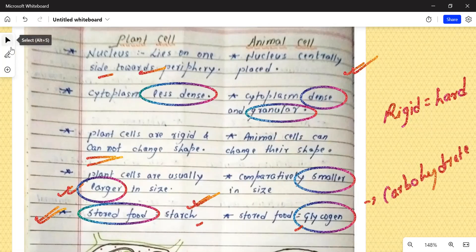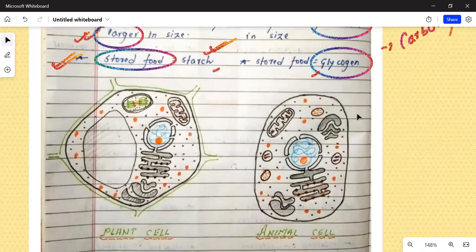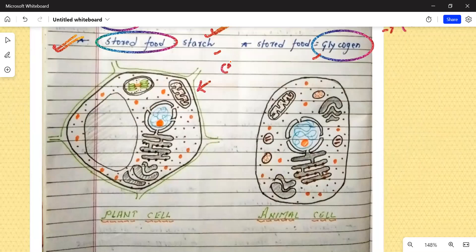Aur yeh dekhe, maine hai aapke convenience ke liye, dono hi plant cell aur animal cell ka diagram bana diya hai, taaki isko dekhkar bhi aap easily samajh sakte hai. So here we have the plant cell and the animal cell, agar aap isko label karna chahe hai, toh first of all, outermost cell wall, sabse bahar mein aapki cell wall hai, then inside cell wall we have cell membrane.